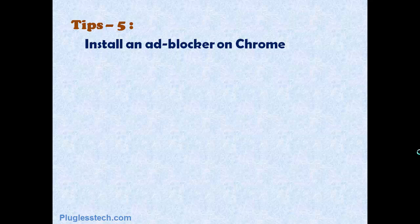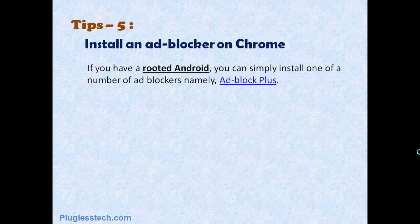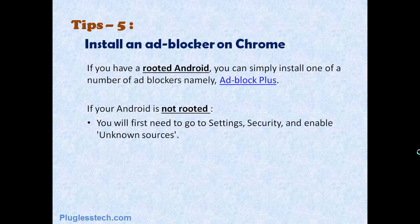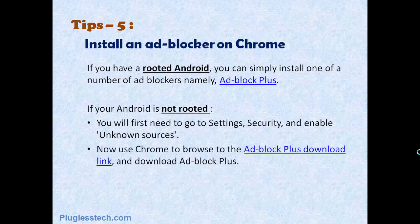Tip 5: Install an Adblocker on Chrome. If you have a rooted device, you can simply install one of a number of Adblockers, namely Adblock Plus. If your Android is not rooted, you will first need to go to Settings, Security, and enable Unknown Sources. Then use Chrome to browse to the Adblock Plus download link and download Adblock Plus.